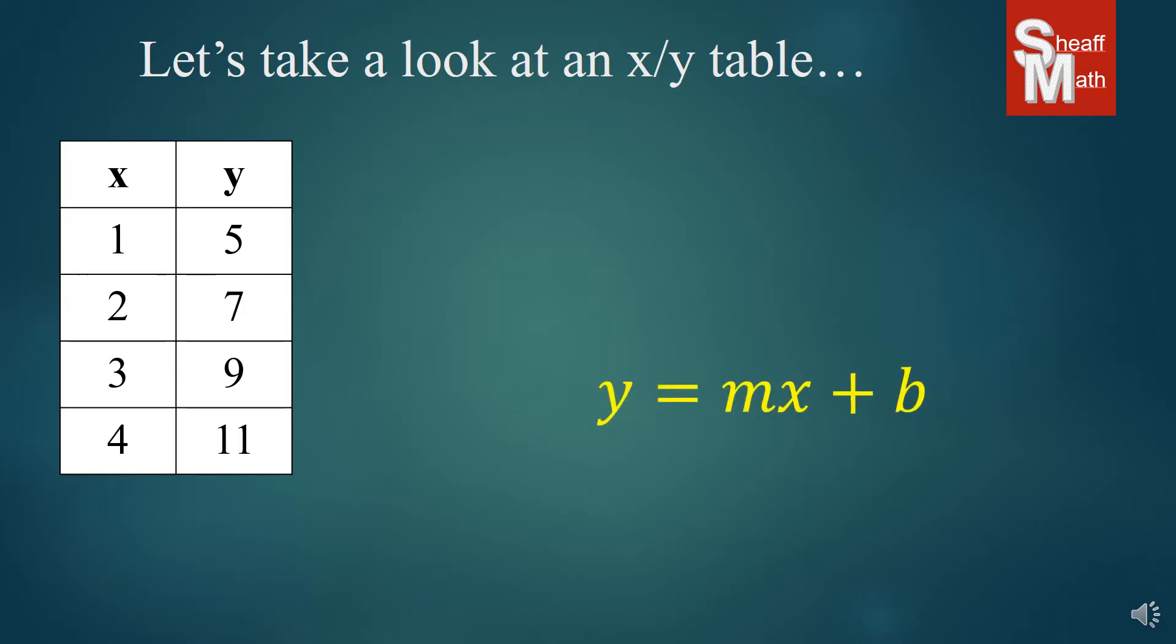So we start with our generic form again, and we need to find our slope and y-intercept. So this one looks pretty easy. It looks like it's going up by 2s. So that's an easy slope to find. The x's are going up by 1, 2, 3, 4. So that is our slope.